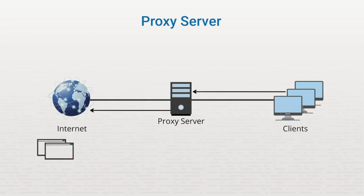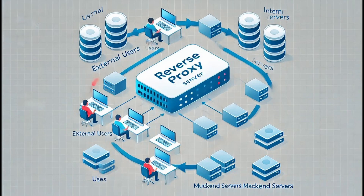A proxy server may also be configured to cache frequently accessed internet content. When a user accesses a webpage through a proxy server, it can cache that data locally. Then, when another user on the internal network tries to access the same webpage, the proxy server pulls the page from its cache and delivers it to the end user without going out on the internet again — saving bandwidth. There's another type called a reverse proxy, which works differently. Instead of filtering internal requests headed out to the internet, a reverse proxy handles requests traveling from the internet to internal servers.